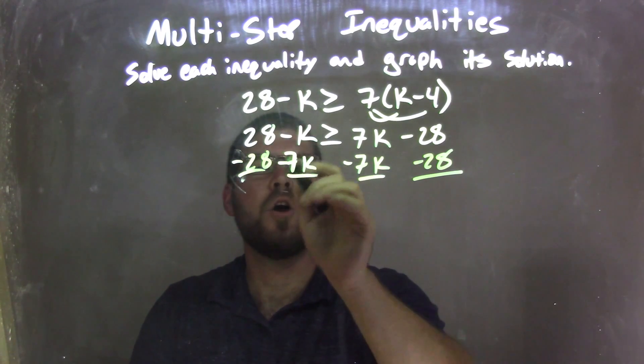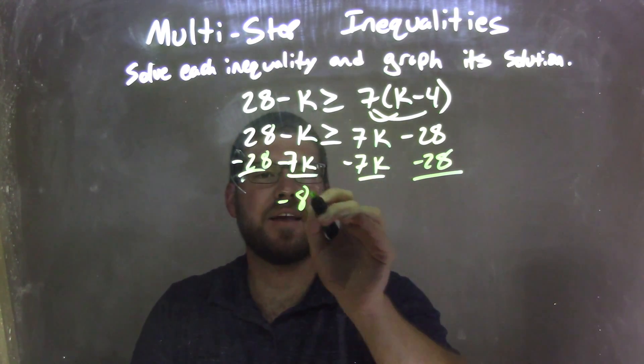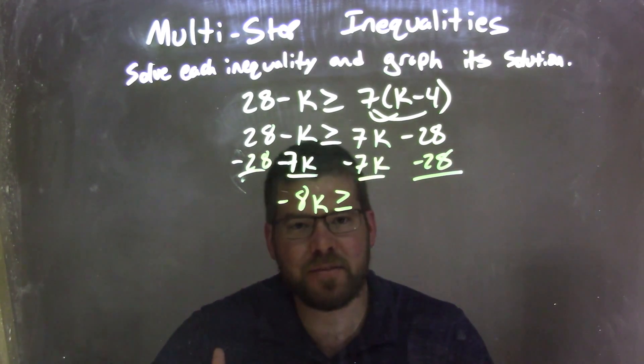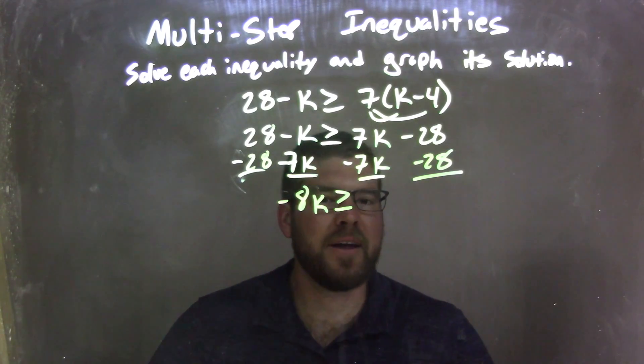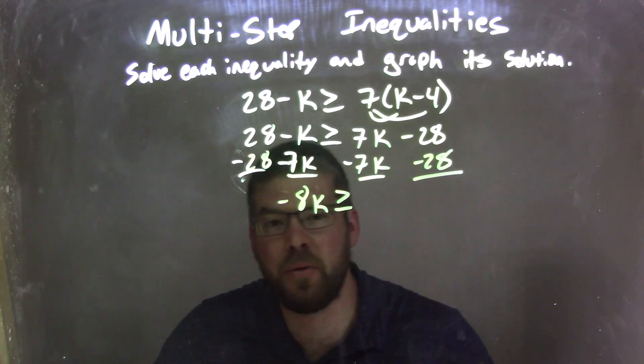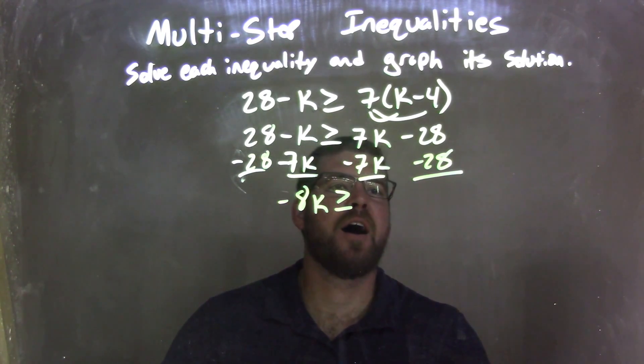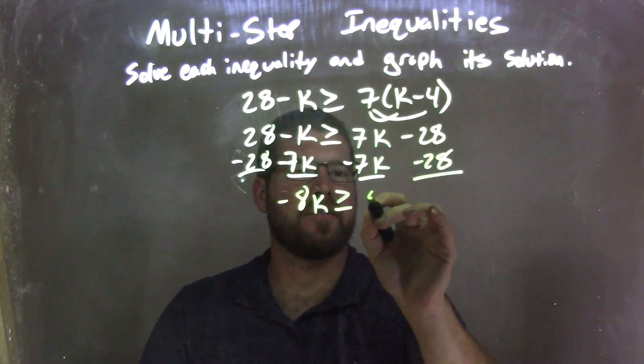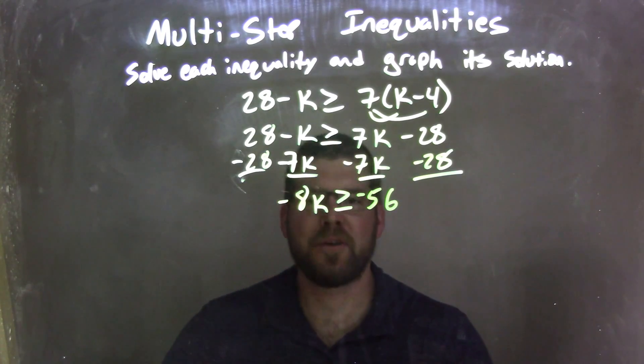This leaves me with negative k minus 7k is negative 8k on the left, greater than or equal to negative 28 minus negative 28. We're kind of adding them together, but they're both going to be negative here. That comes out to be negative 56.